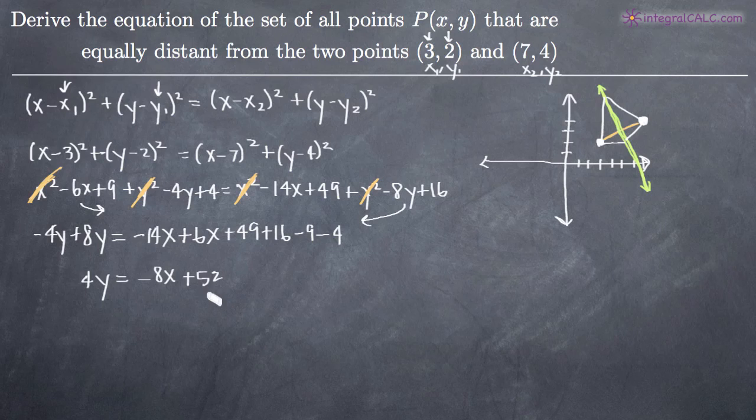We can divide through by 4 to get y = -2x + 13 and this is now slope intercept form of the equation of that green line.